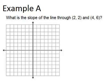In example A, it says, what is the slope of the line through the point (2, 2) and (4, 6)? So let's plot those points to visualize what's going on.